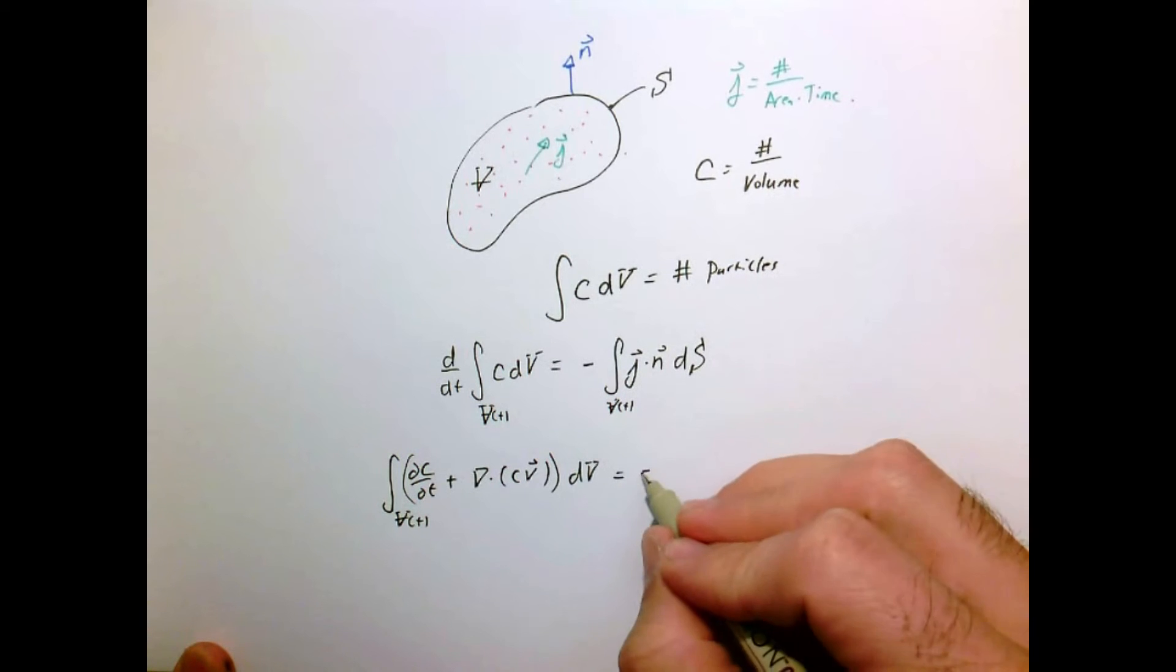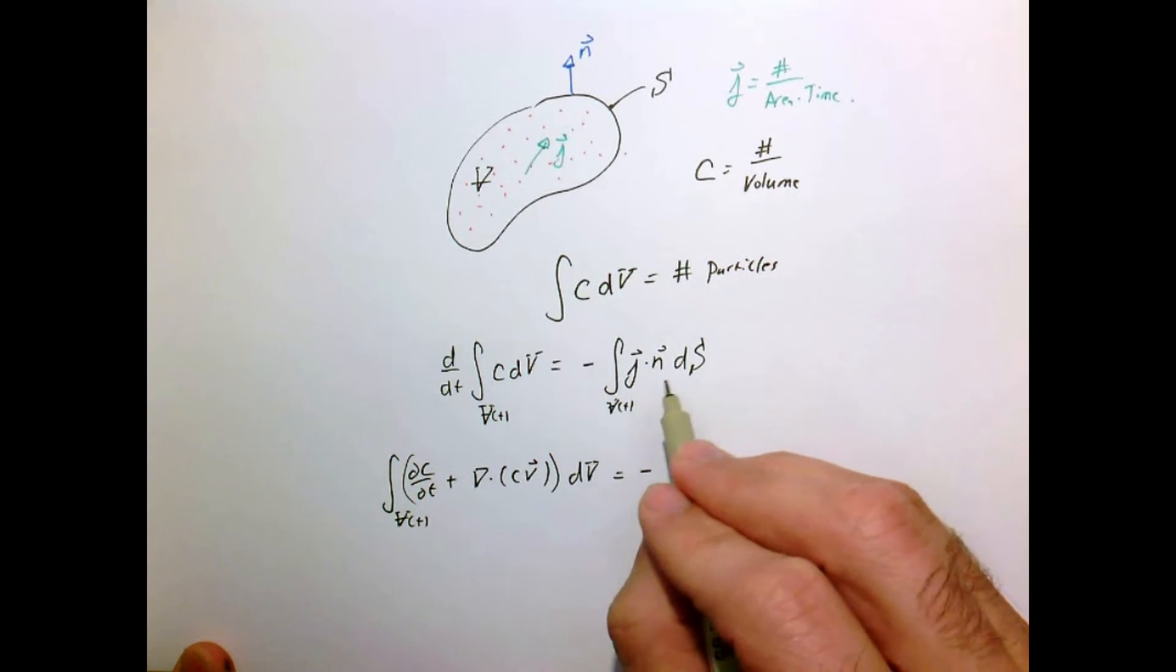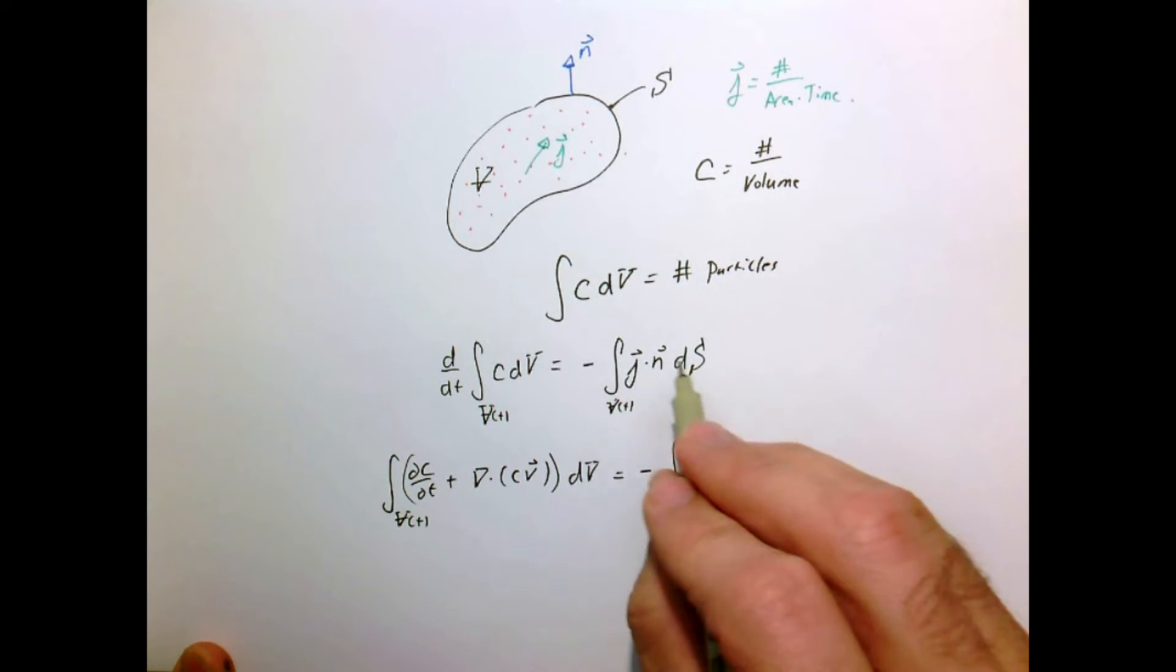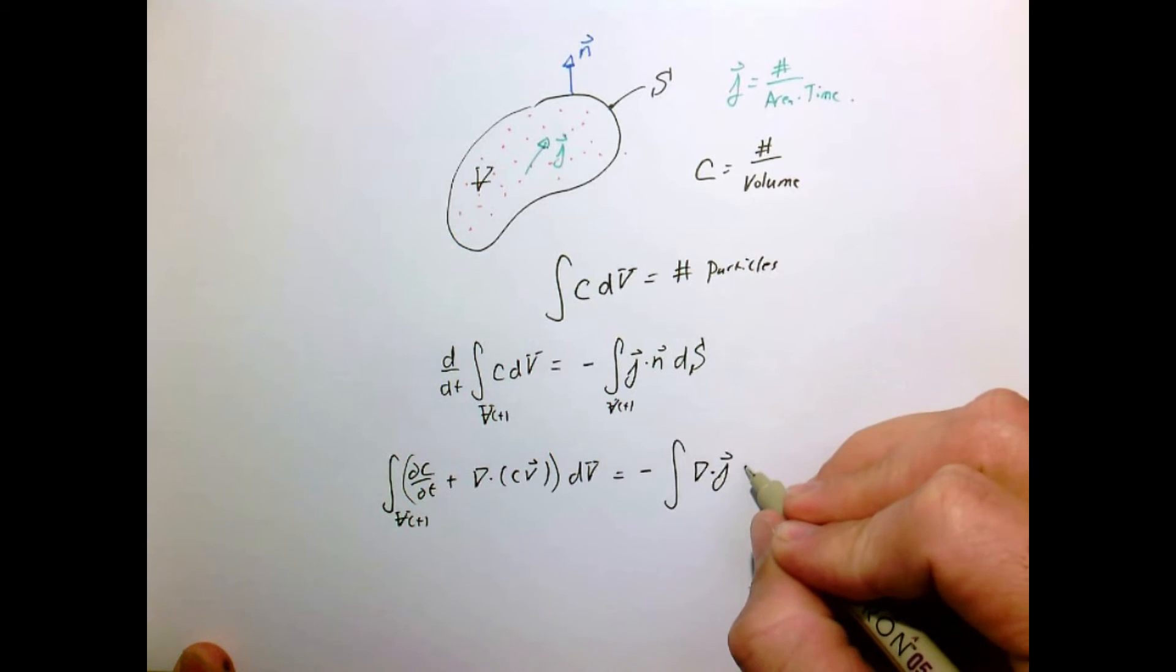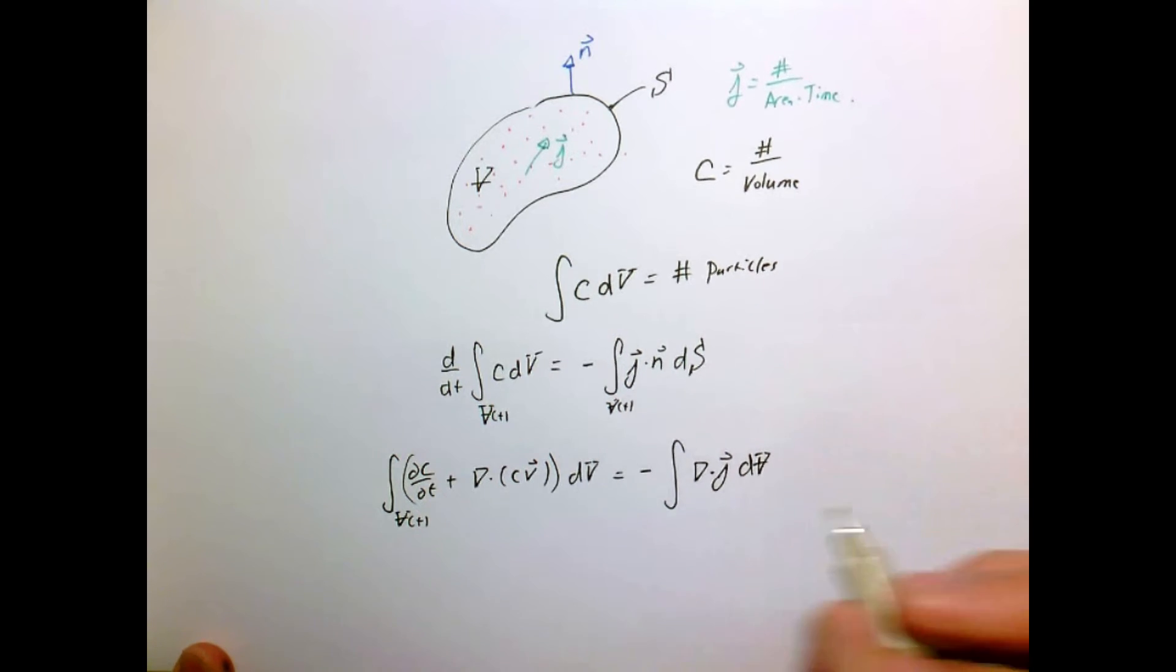As we saw before, we can use the divergence theorem to write that as the divergence of j over the entire volume. I can group all my terms together, and since this was an arbitrary material volume, the term inside the integral has to be zero, and that gives us the differential form of our conservation law.